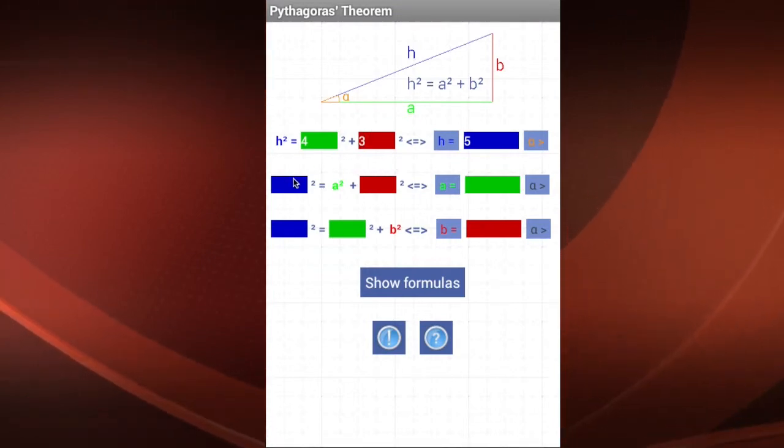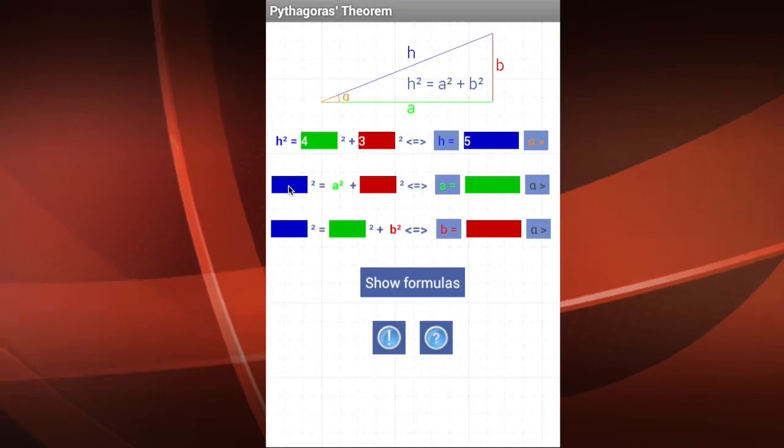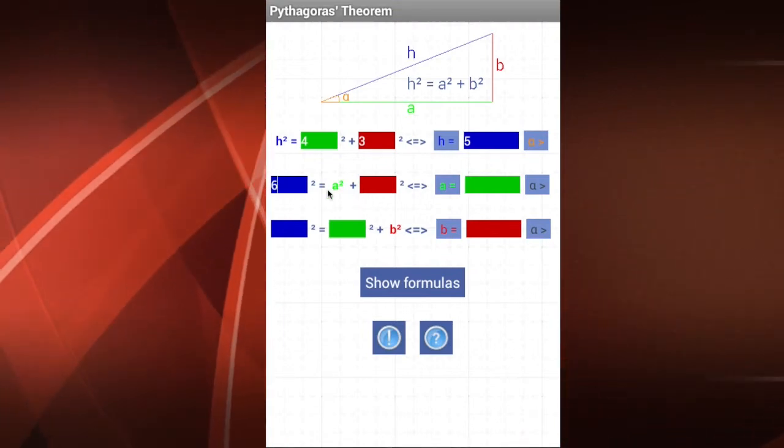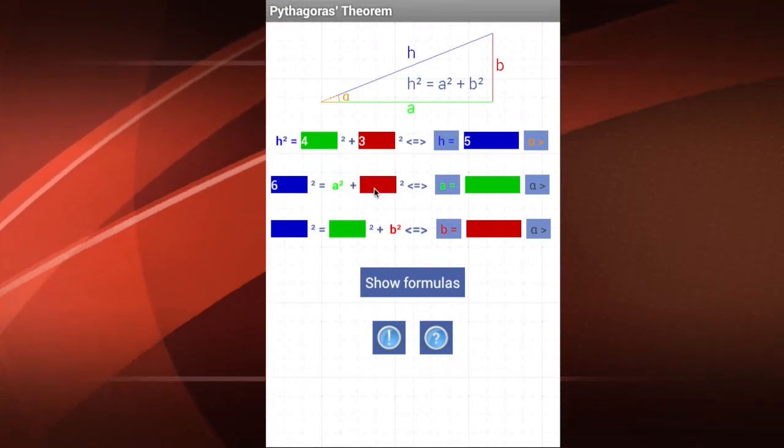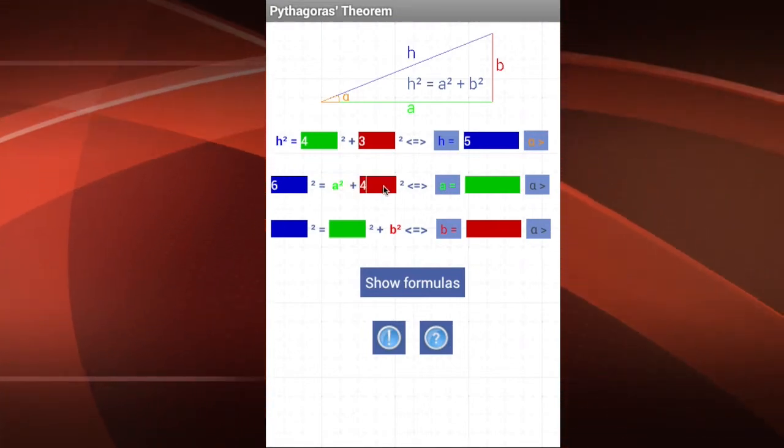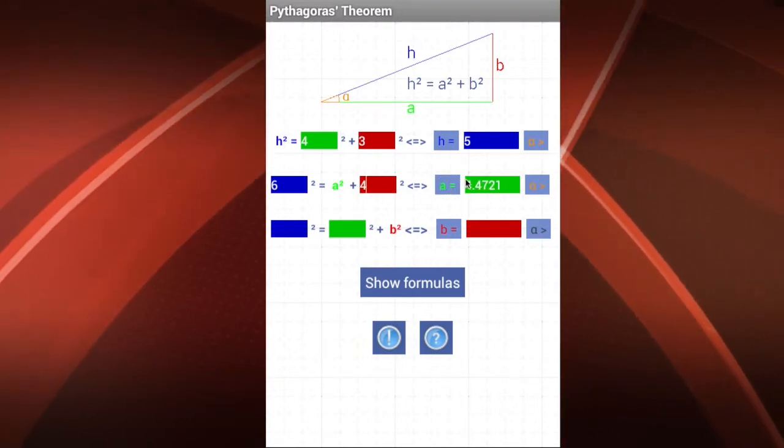Now, imagine that we have the value of the hypotenuse, and it is 6. We want to determine the side A, and we know that side B is 4. So if I click here, I get the side A.